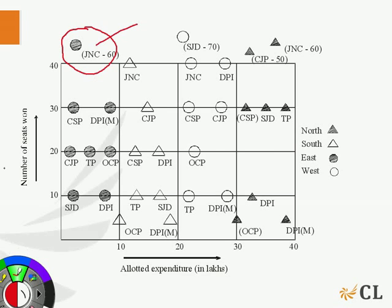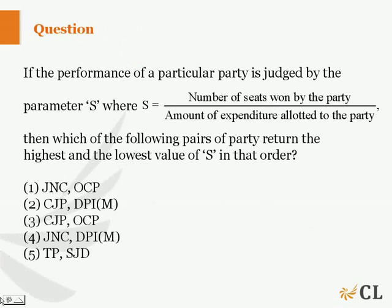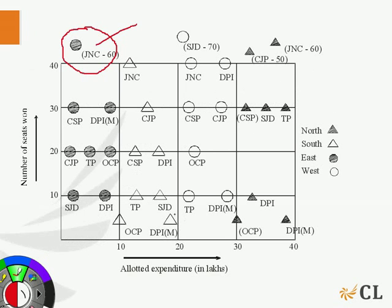Coming back at the options, we see that JNC is in option 1 and 4. So, we need to check only options 1 and 4. That is for parties OCP and BPIM.